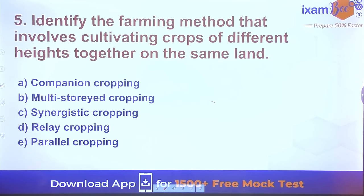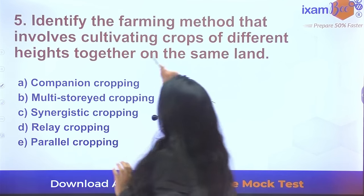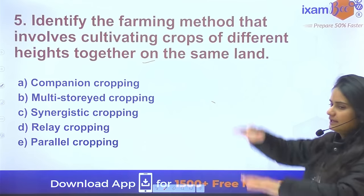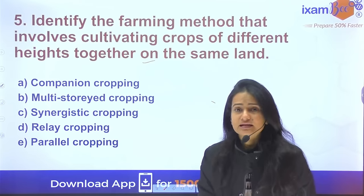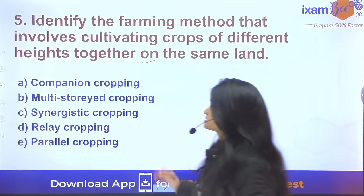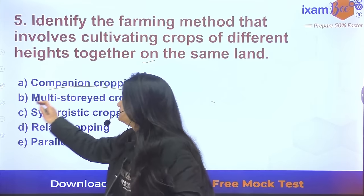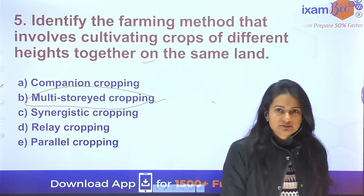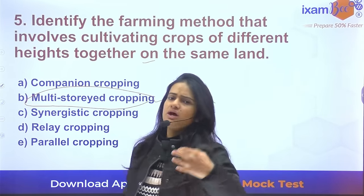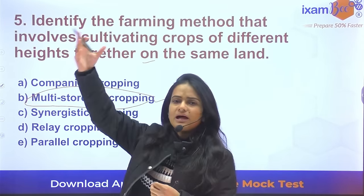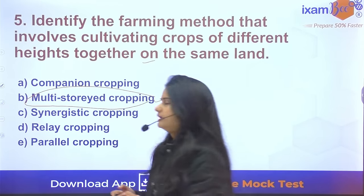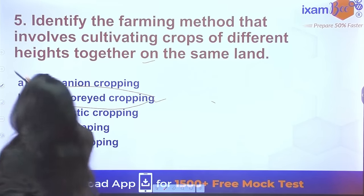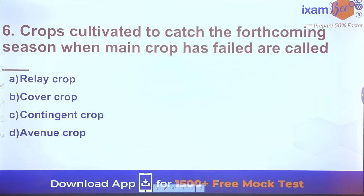Question 5: Identify the farming method that involves cultivating crops of different heights together. When we put crops of different heights in one land area, that is called multi-storied cropping. For example, we have ginger, we put papaya, or if we put a vine crop we grow it together.